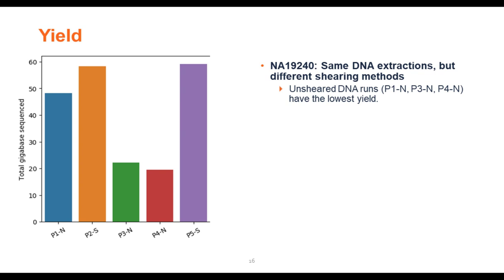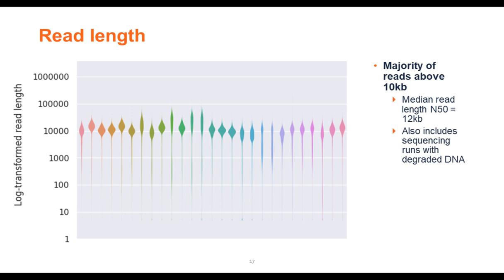For the NA19240 sample, we used five flow cells to generate a high-coverage dataset. Flow cells one, three, and four were sequenced using unsheared DNA and had lower yield compared to flow cells two and five, for which we sheared the DNA — consistent with what we observed across the 27 runs.